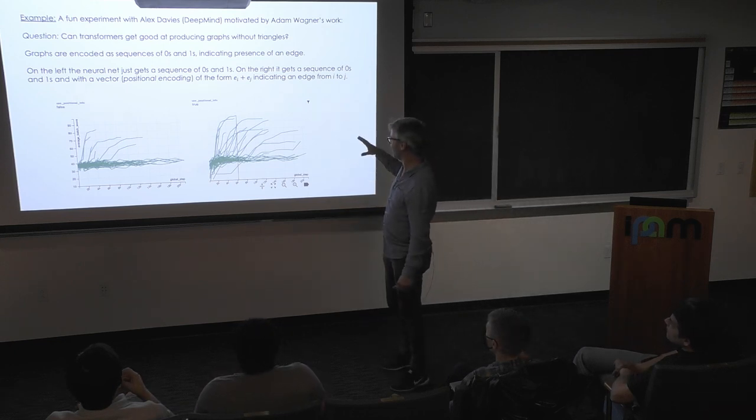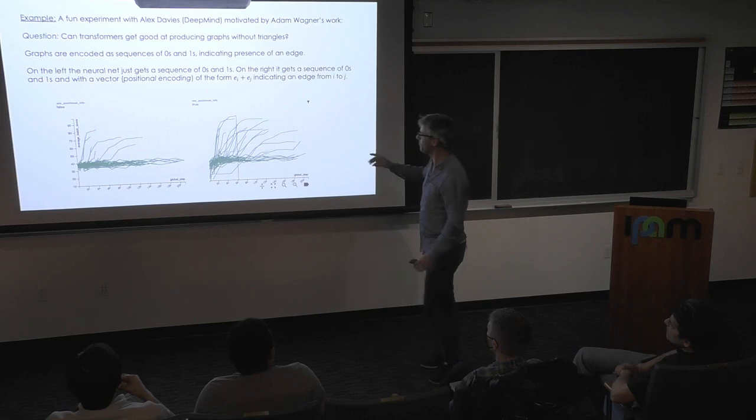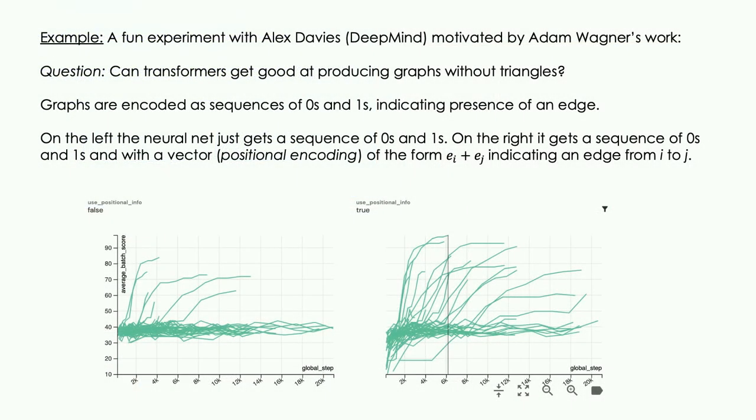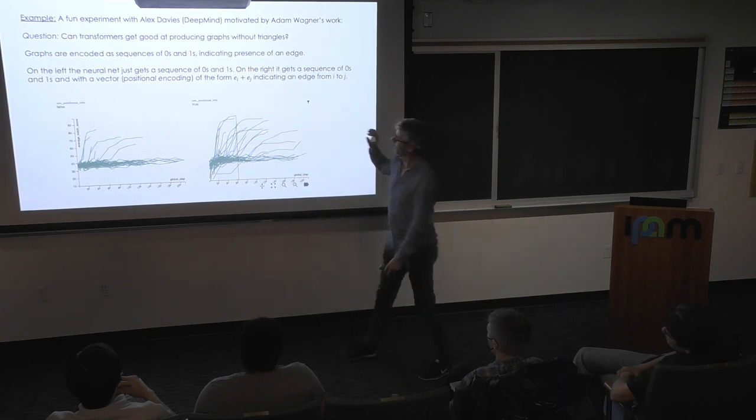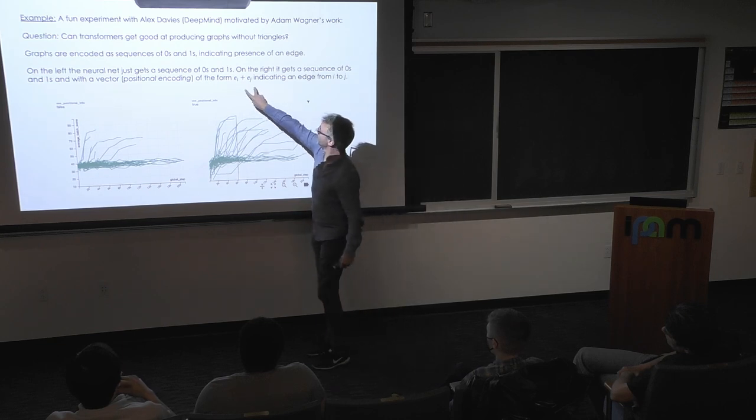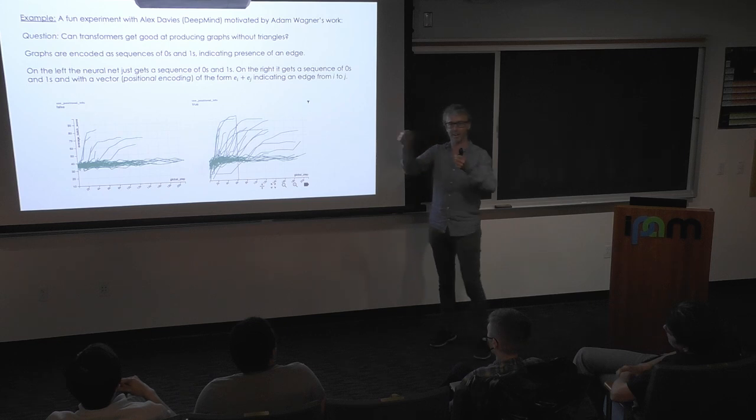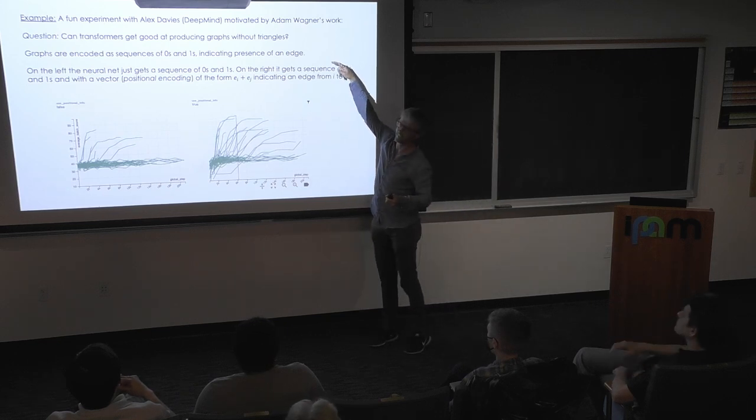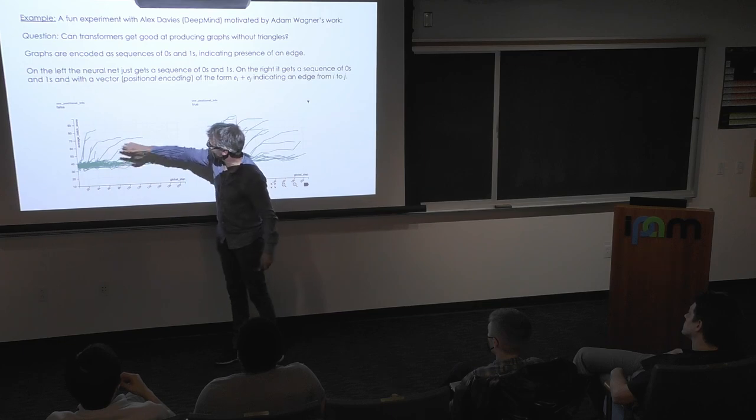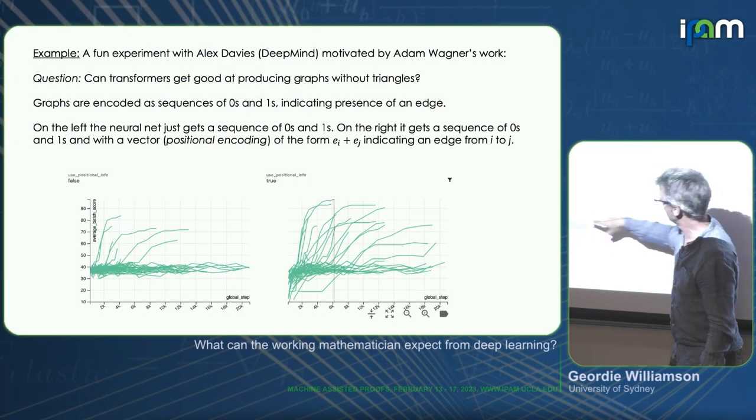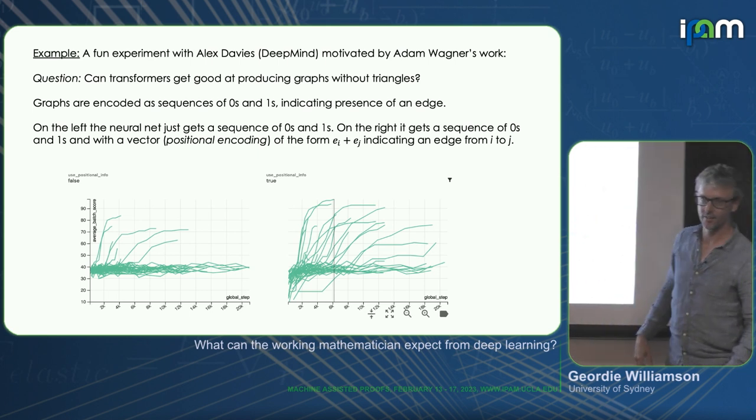If we imagine the adjacency matrix of our graph, we're reading along the top row, reading along the next row. So we choose this very arbitrary way of putting the data of what makes a graph into a transformer and ask the transformer, can you get good at producing graphs without triangles? So there isn't explicit information of how many rows there are. And this is really just an example of a nice little experiment one can do. What we're trying to do is reach this maximum given by the bipartite graph on probably like 30 vertices. So we want to do 15 and 15 on both sides. And when that happens, we get this maximal score.